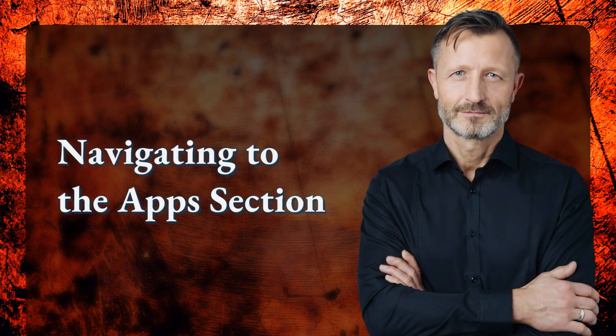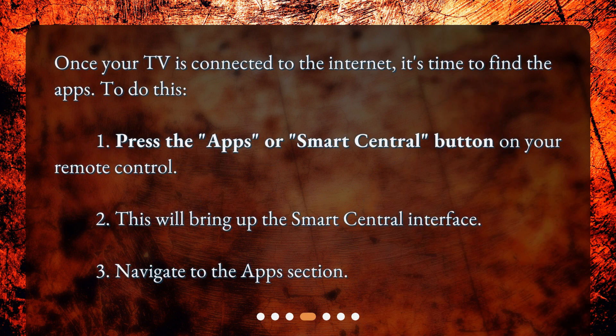Navigating to the Apps section. Once your TV is connected to the internet, it's time to find the apps. To do this: 1. Press the Apps button on your remote control. 2. This will bring up the Smart Central interface. 3. Navigate to the Apps section.